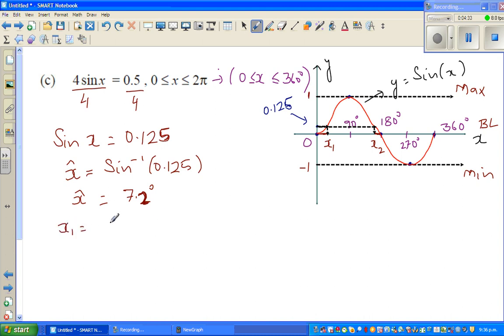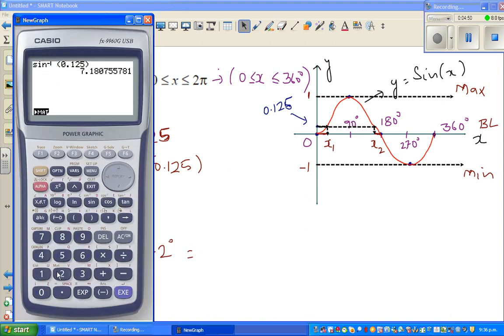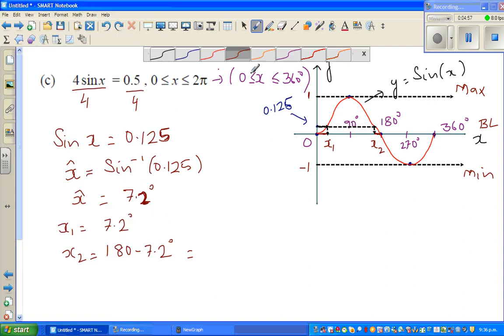So I can say x1 is 7.2 degrees, and x2, the second angle, is 7.2 away to the left of 180. That is nothing but 180 minus 7.2 degrees. Let me use a calculator: 180 minus 7.2 is 172.8. So the other angle is 172.8.